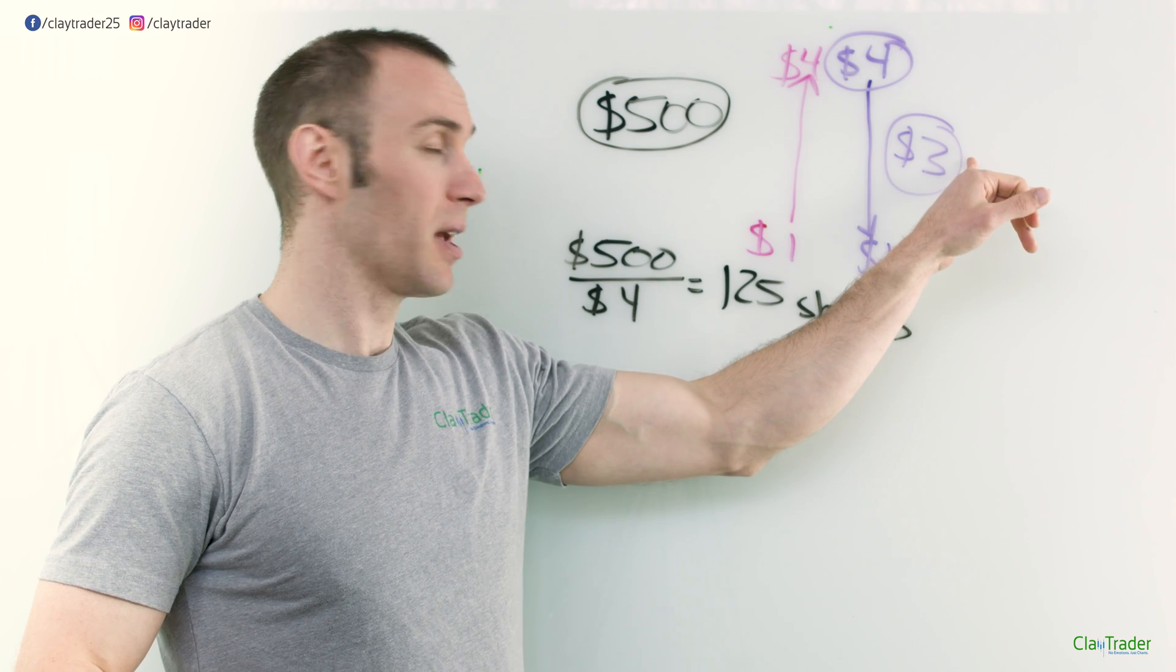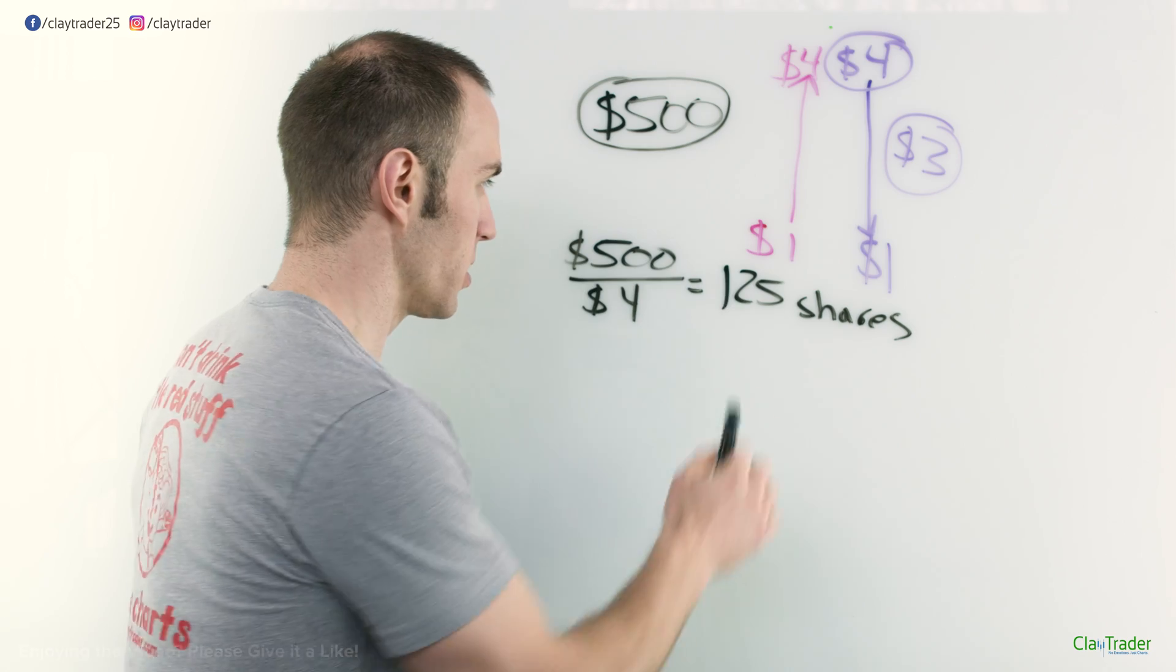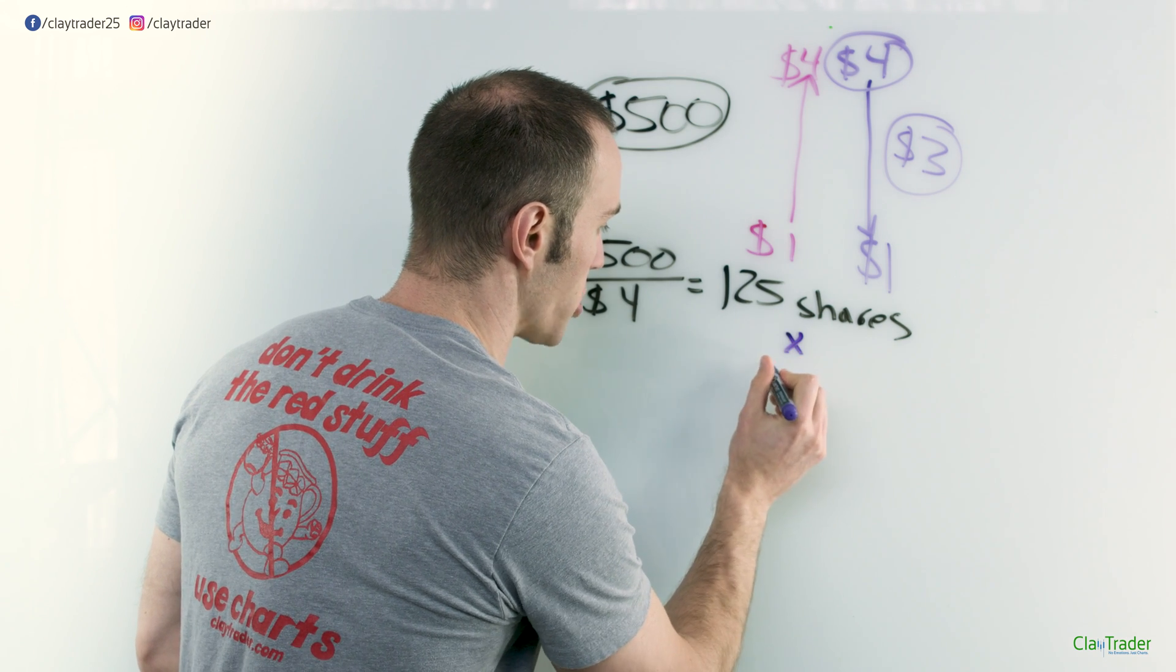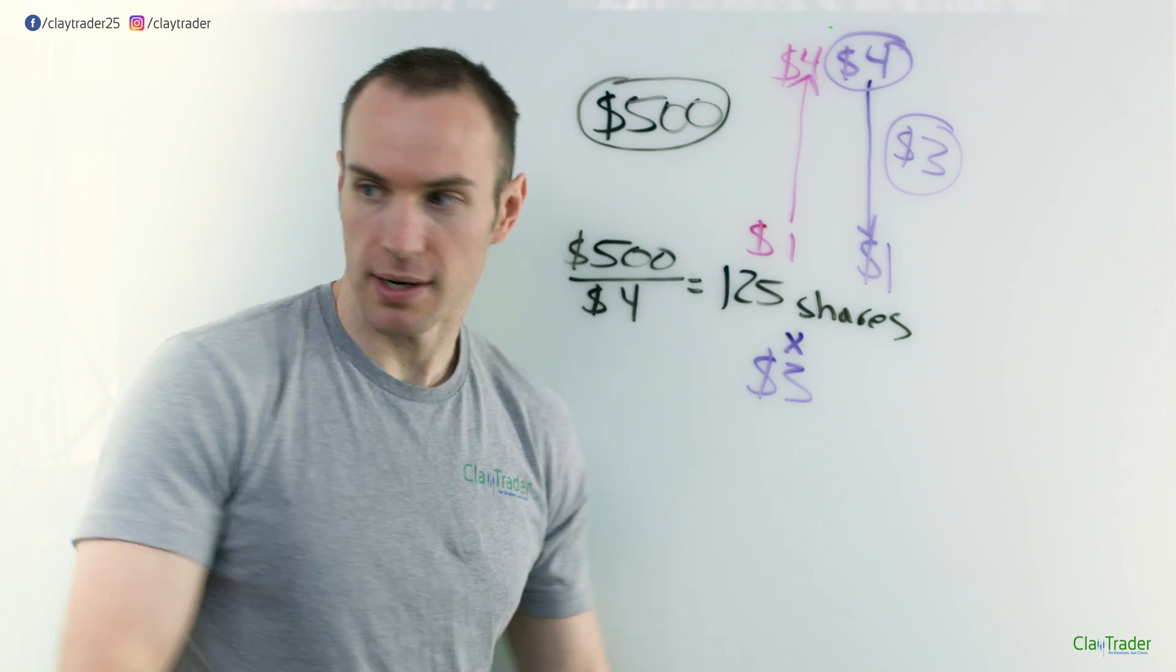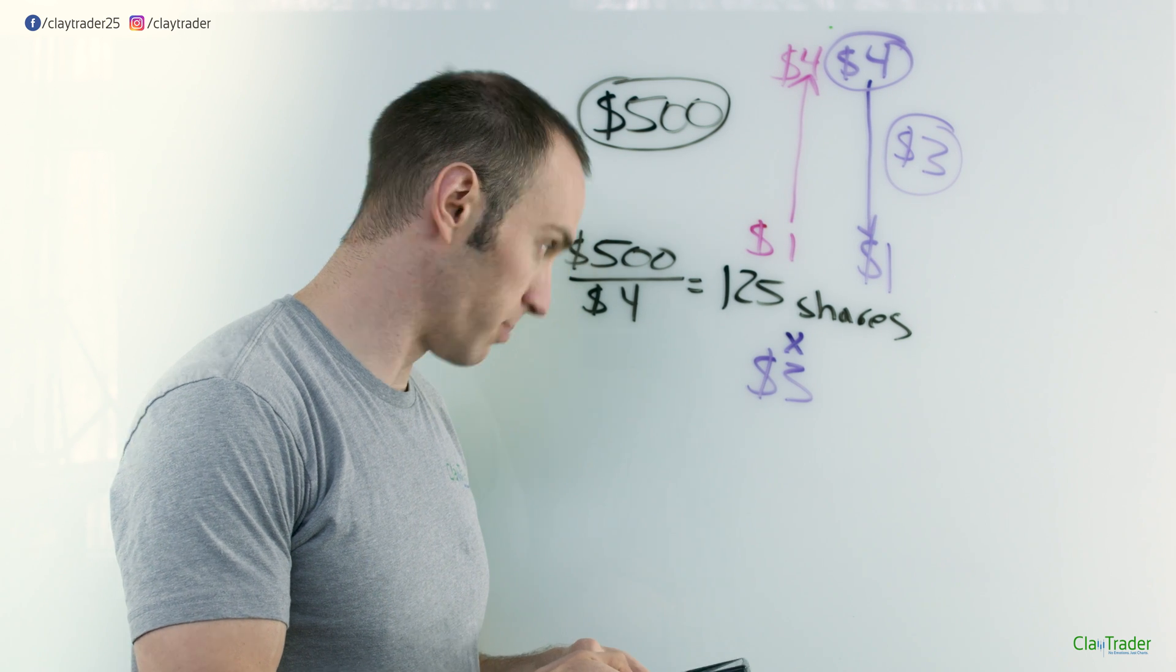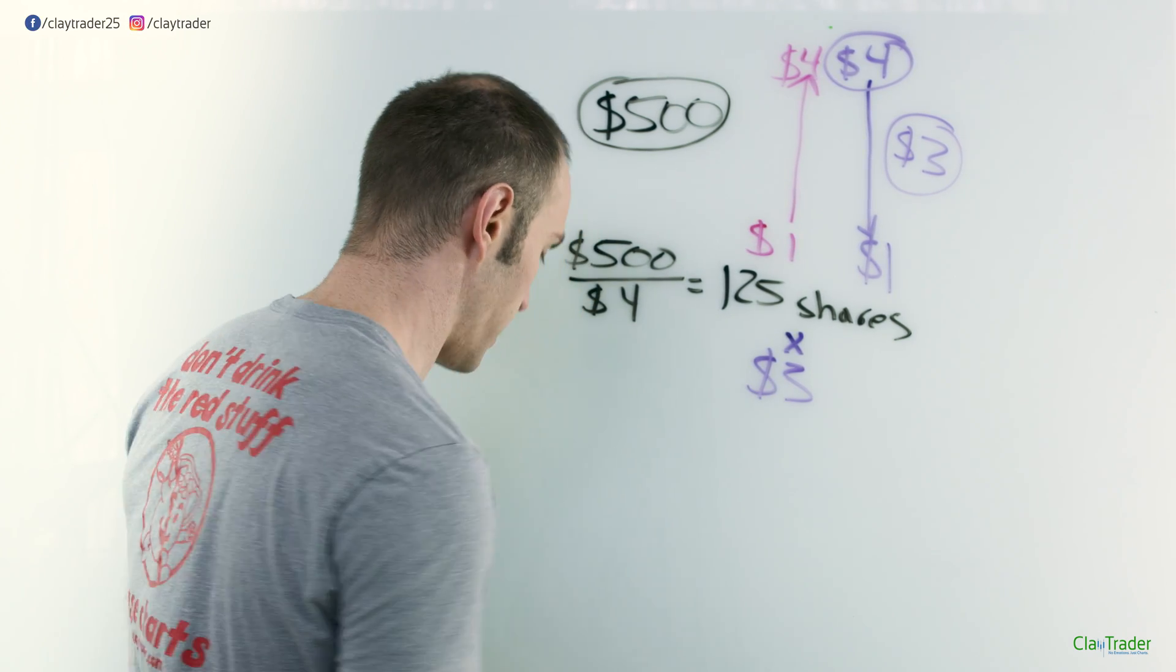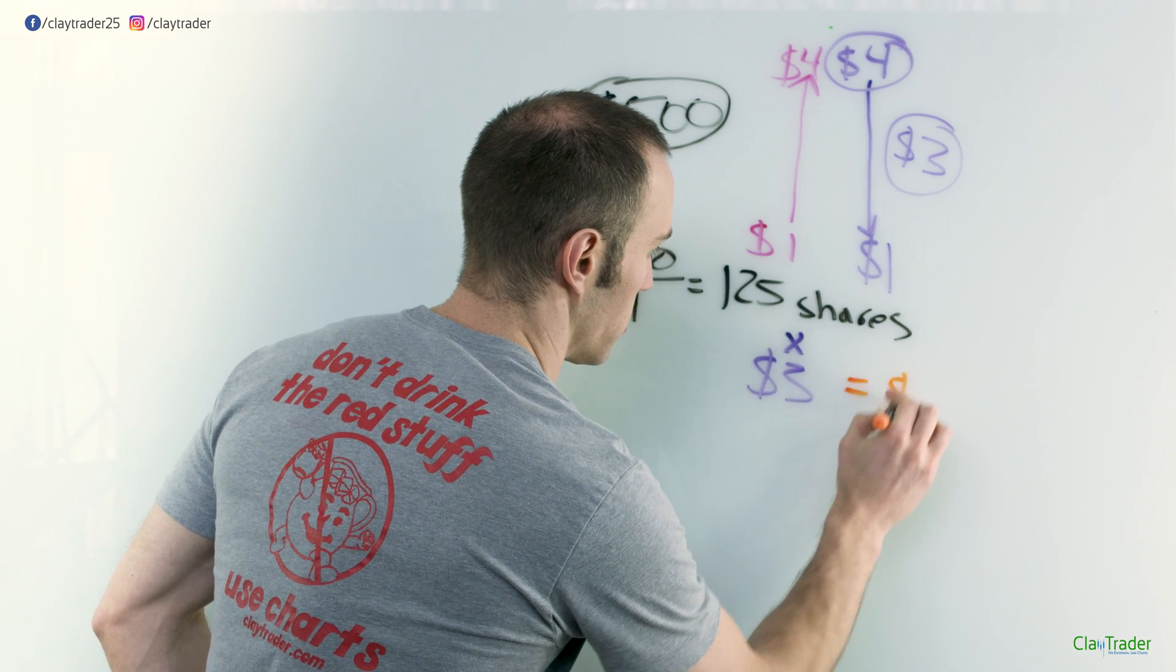We already established that you made $3 per share on the short. And how many shares did you short? Right there, 125. So let's multiply that by the profit per share, multiplied by $3 per share. I need my calculator again. I don't want Leo to get mad at me. 125 times 3 is $375, okay. So your profit here is $375.